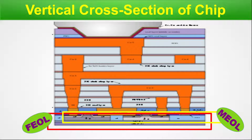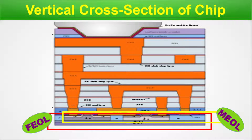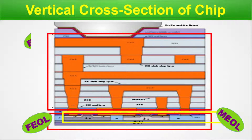The transistor level or active/passive level device interconnections are done through the MEOL process. This is a very low-level connection — we have not used any vias or higher metal layers. So it is very minimalistic interconnect.